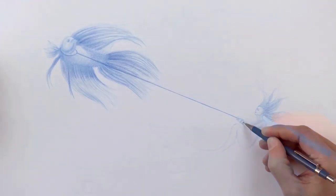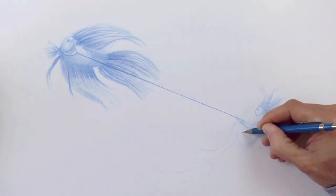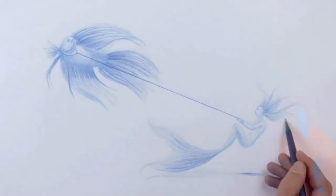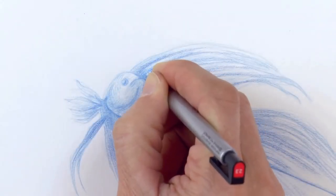The list of materials is in the description of the video. From the waist down, she will have scales, of course. We draw the tail and a shadow. This will make it look as if it is close to the bottom.